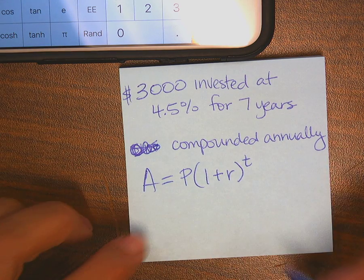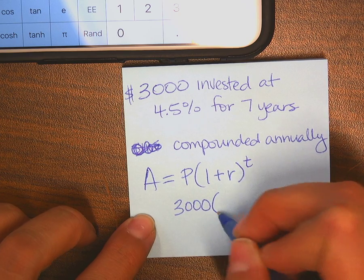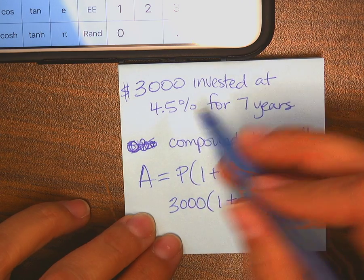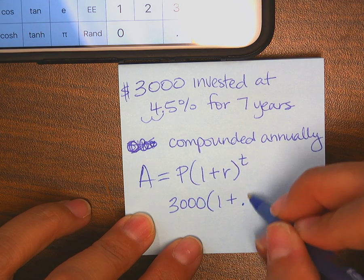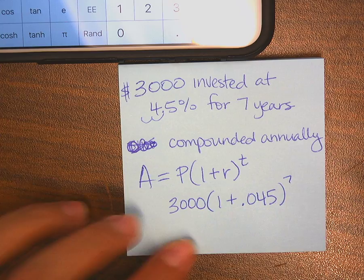Okay, figure out where things go. My principal is 3,000. 1 plus my rate is, now remember you've got to move that over, 0.045 and then it's for 7 years.